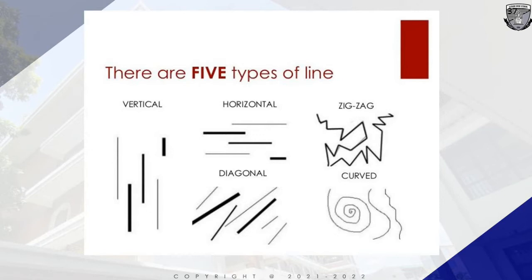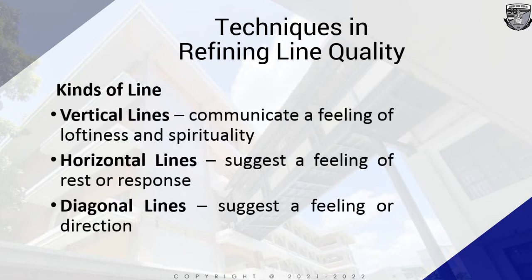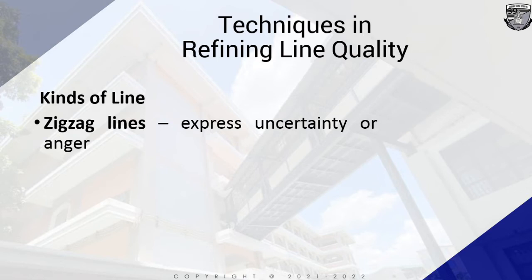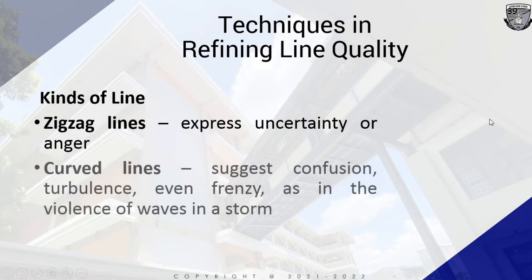There are five types of lines to consider in drawings: vertical, horizontal, diagonal, zigzag, and curved lines. Vertical lines represent a feeling of loftiness and spirituality. Horizontal lines suggest a feeling of rest or repose. Diagonal lines suggest a feeling of direction — for example, a graph moving upward represents a positive response. Zigzag lines express uncertainty or anger. Curved lines suggest confusion, turbulence, or frenzy as in the violence of waves in a storm. Those are the kinds of lines that can be used in refining your line quality.